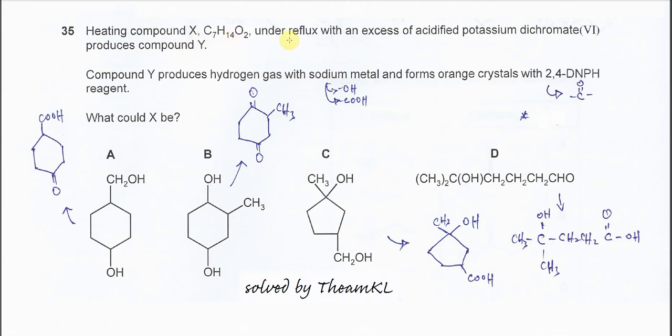Compound X, heat under reflux with excess potassium dichromate, produces compound Y.